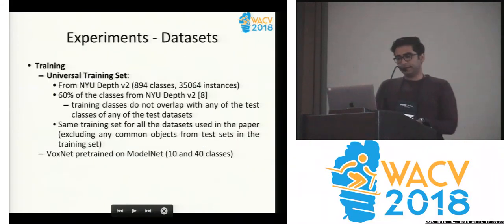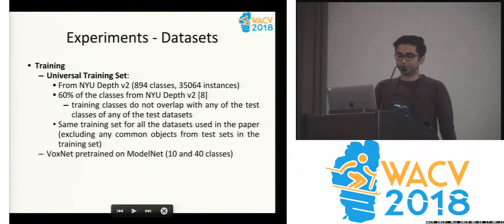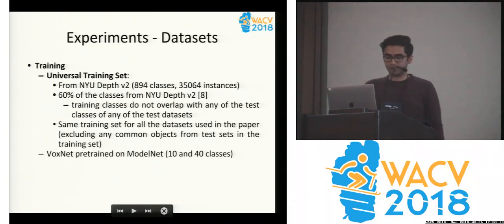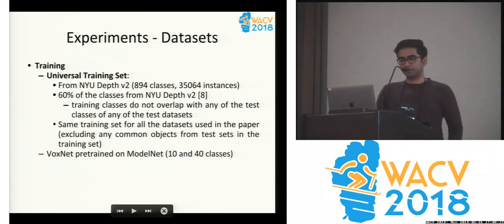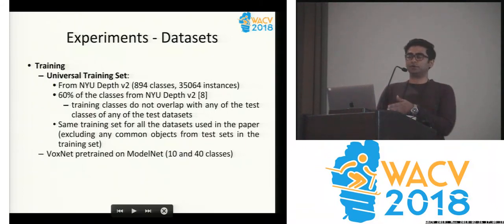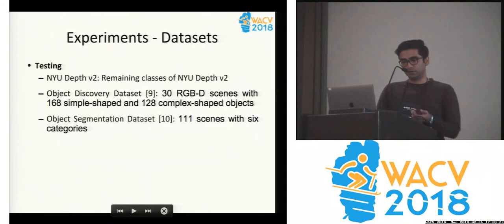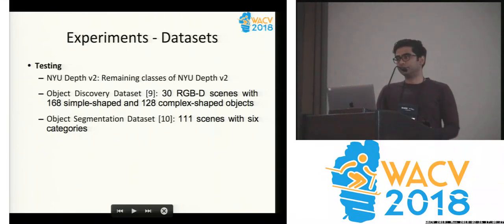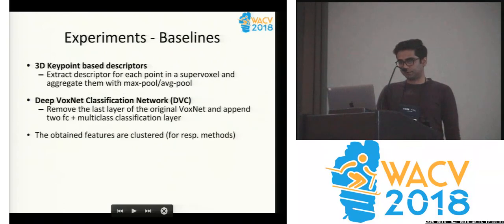We ran this on current large datasets. For NYU Depth 2, we took about 60% of this dataset as a training set, and this was a universal training set. All the testing sets we used did not have the objects used in this training set. We used the remaining part of NYU Depth 2 as one test set, and we used two other standard benchmarks, which are relatively small but allow us to compare with previous works.